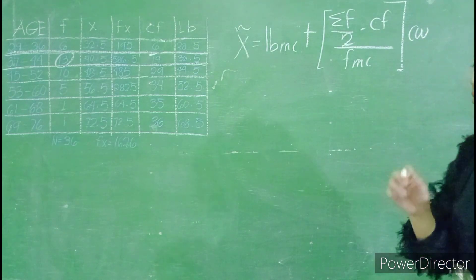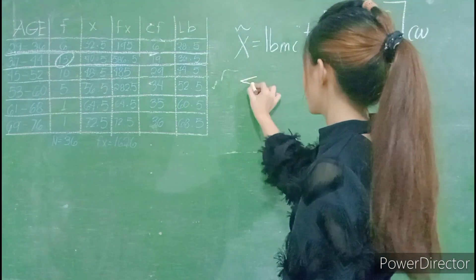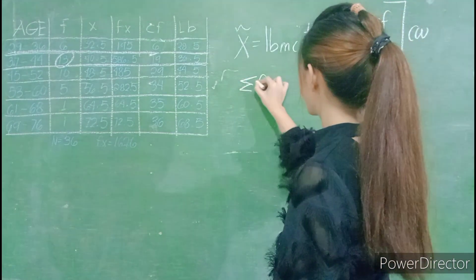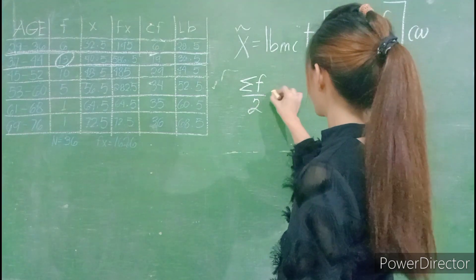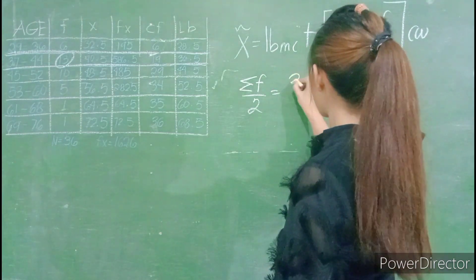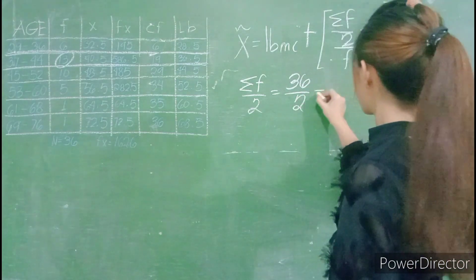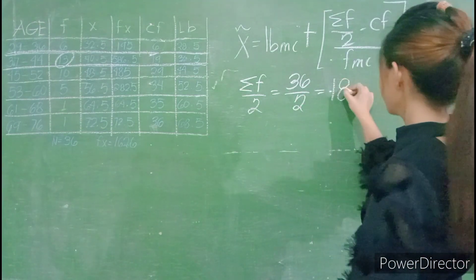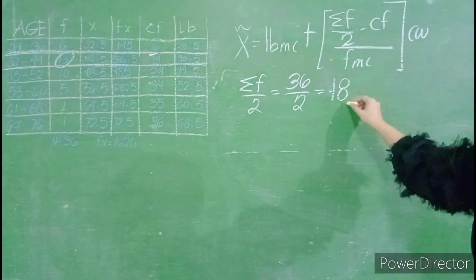But first thing we do is we should find the value of the summation of f divided by 2. Our f is 36 divided by 2 which is 18. Let us use the 18 to get the median class.